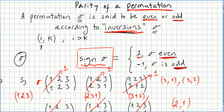In the previous video we were introducing the concept of parity of a permutation, then we jumped to the concept of sign of a particular permutation. We saw that the sign is given by the number of inversions: if the number of inversions is even, the sign is 1, and if the number of inversions is odd, the sign is minus 1.